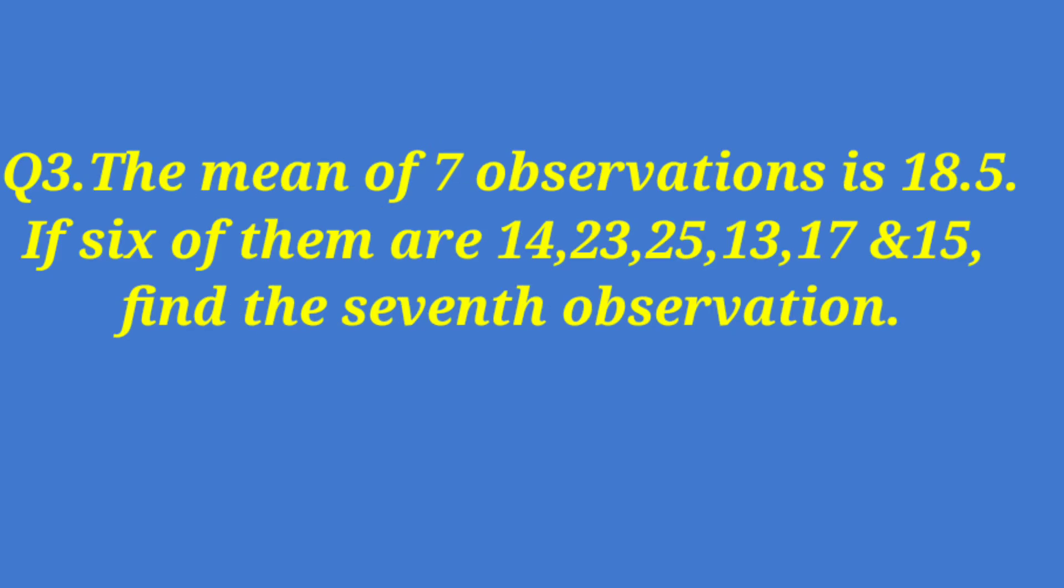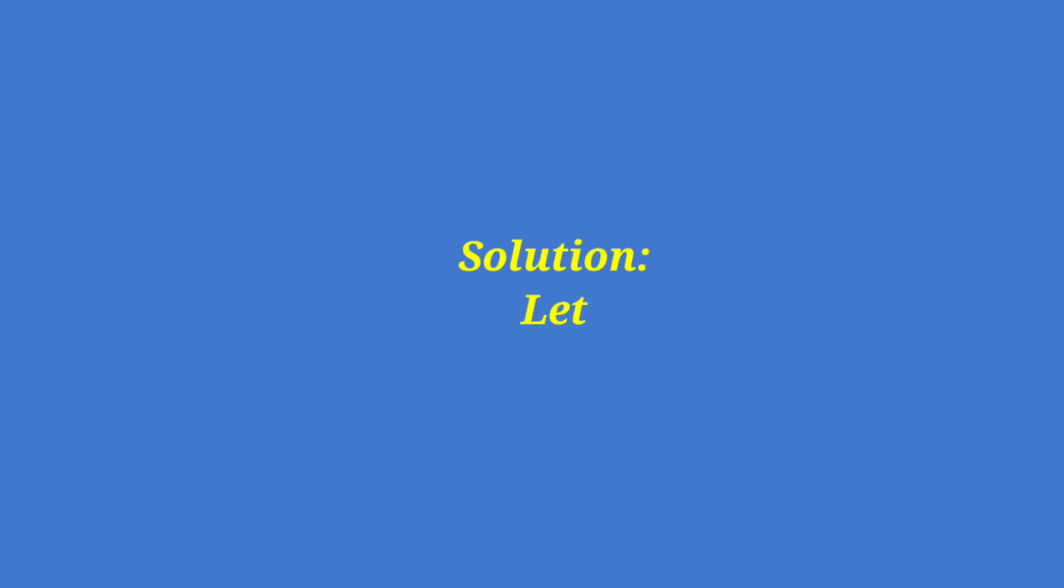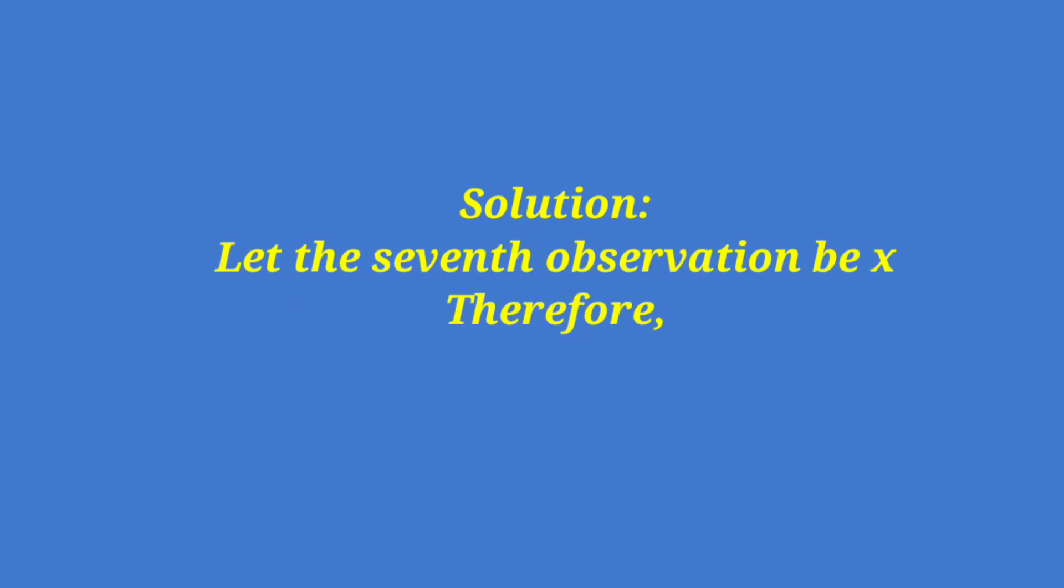Question number three: The mean of seven observations is 18.5. If six of them are 14, 23, 25, 13, 17, and 15, find the seventh observation. Here you have to understand the language of mathematics. Once you understand it, half the work is done.